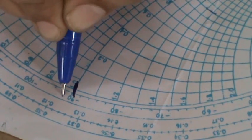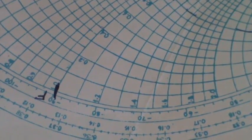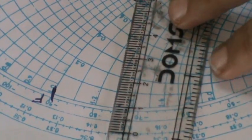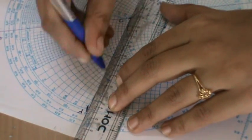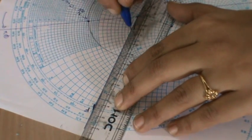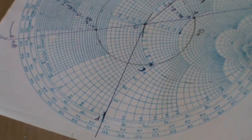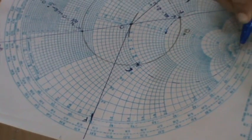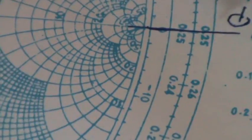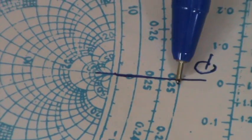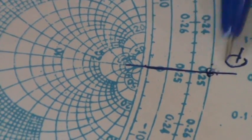What you need to do is again draw a straight line from O to F so that it cuts the outer circle. Let me mark this point as P. This point is nothing but the short-circuited end. Remember this is a short-circuited end.